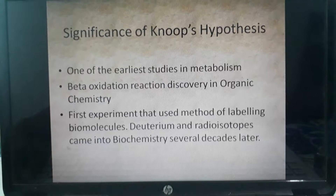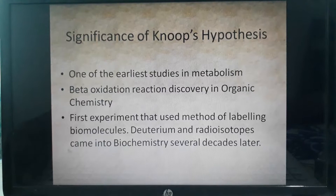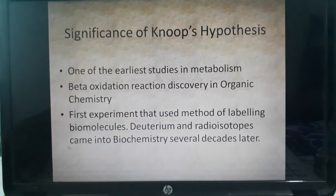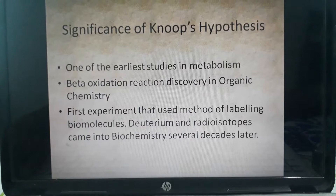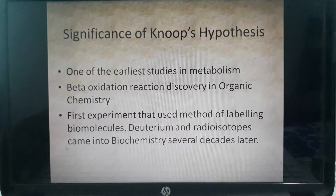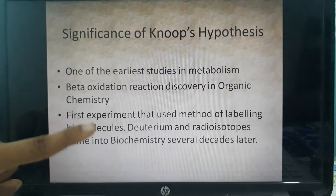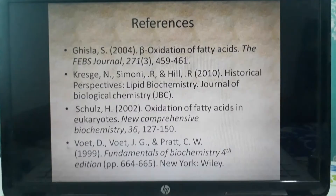The significance of Knoop's hypothesis is threefold: first, it is one of the earliest studies in metabolism. Second, the beta-oxidation reaction was discovered in the context of organic chemistry, where it was previously thought that only alpha oxidation could occur. Third, it was the first experiment to use the method of labeling biomolecules — deuterium and radioisotopes came into biochemistry several decades later, making Knoop the first scientist to label biomolecules.